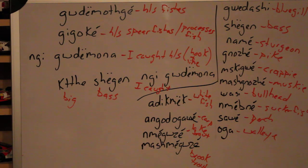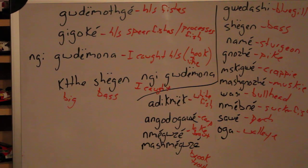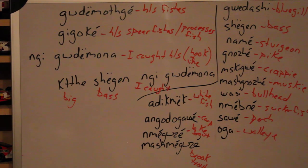Sawe, sawe, sawe — a perch. And oga, oga, oga — a walleye.